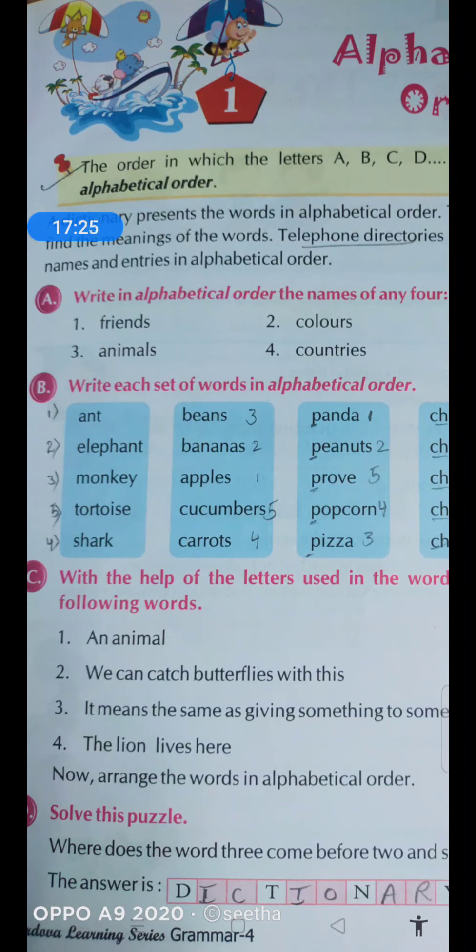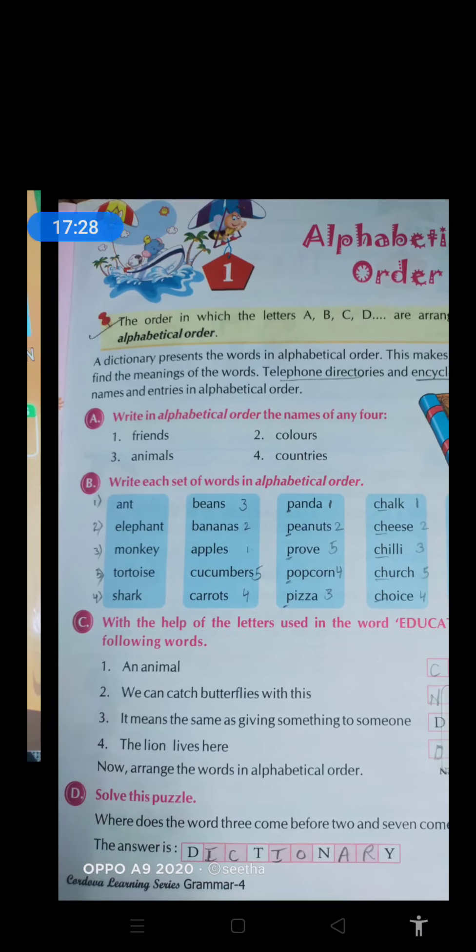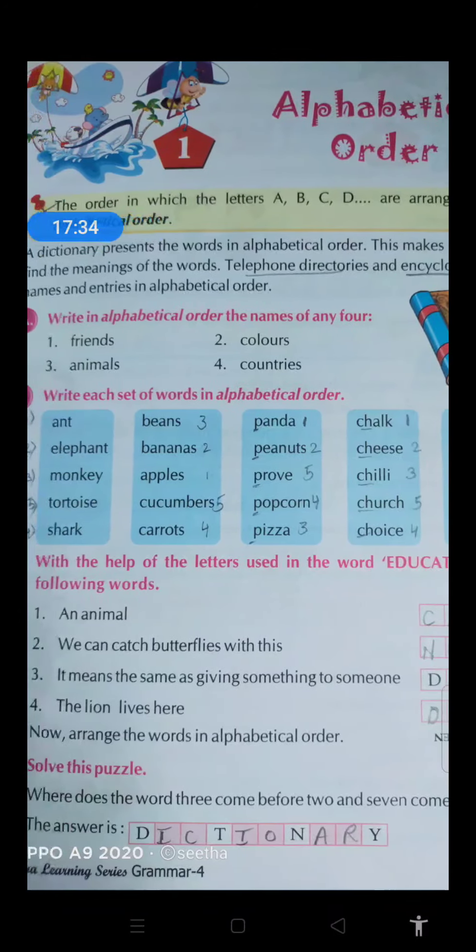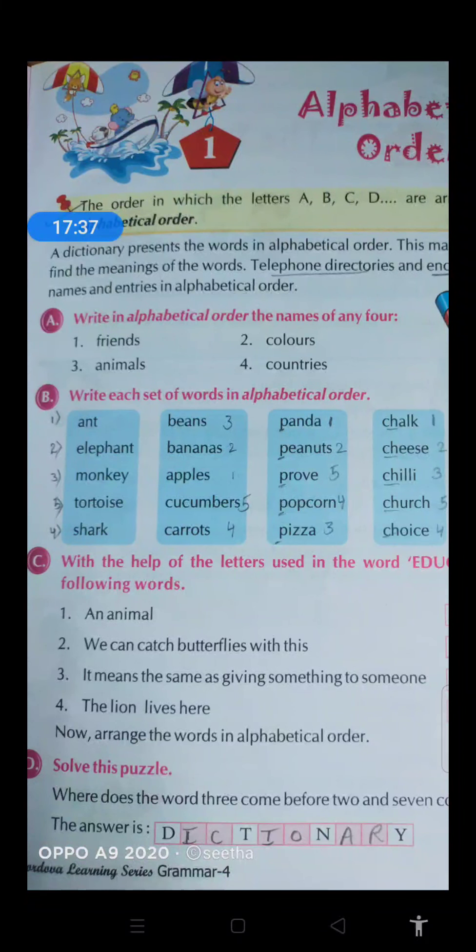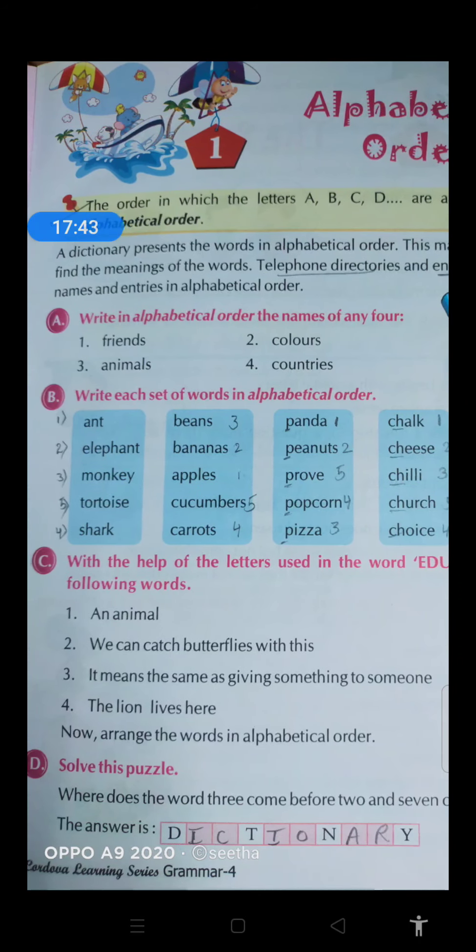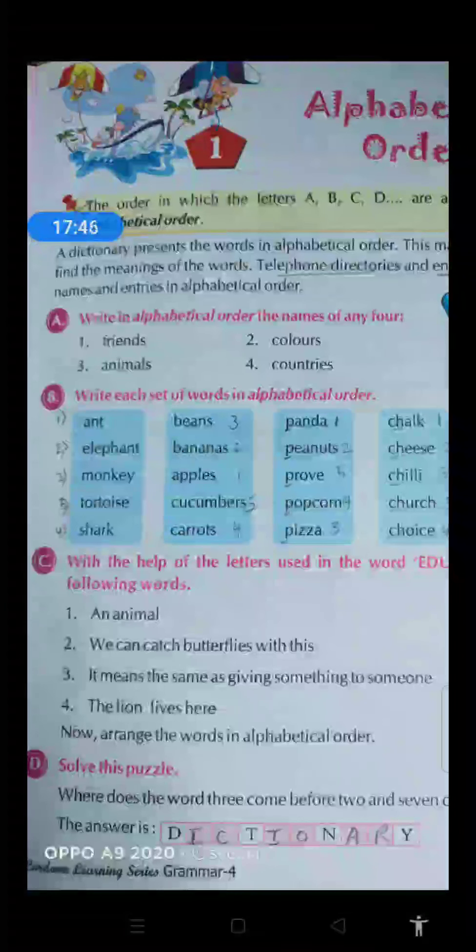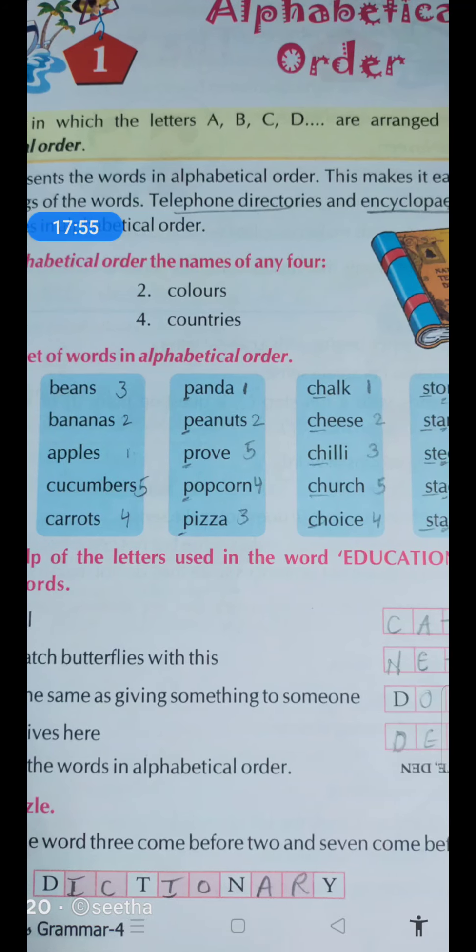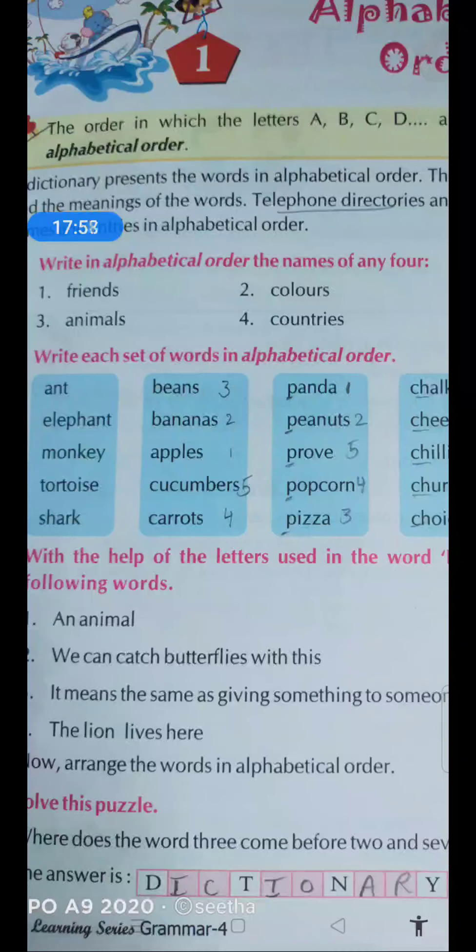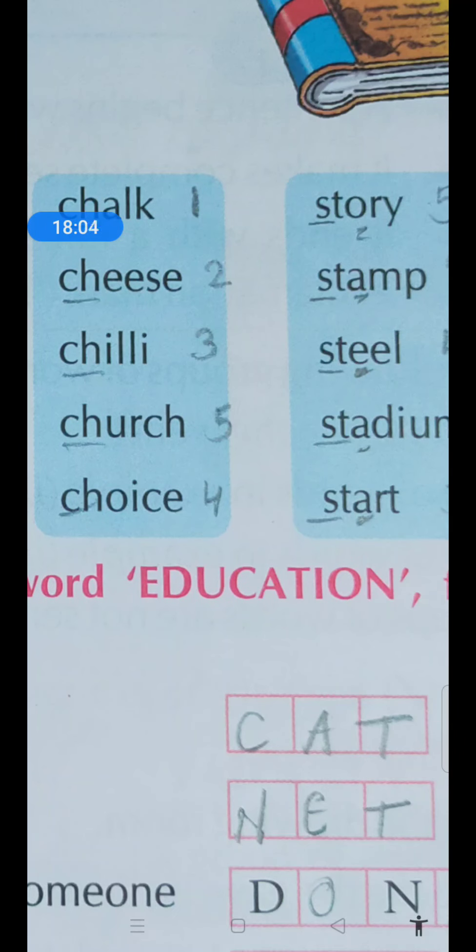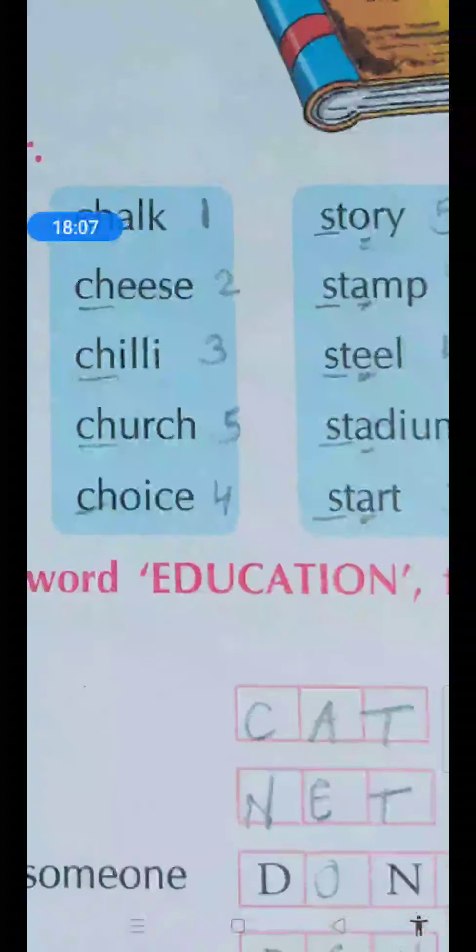In this way you have to finish this. Now exercise C with the help of letters used in the word education. So here a word is given - education. From the following words, with the help of the letters used in the word education, form the following words. So education - an animal. So the name of an animal is there in this word education. E-D-U-C-A-T-I-O-N. C-A-T - cat, name of an animal.